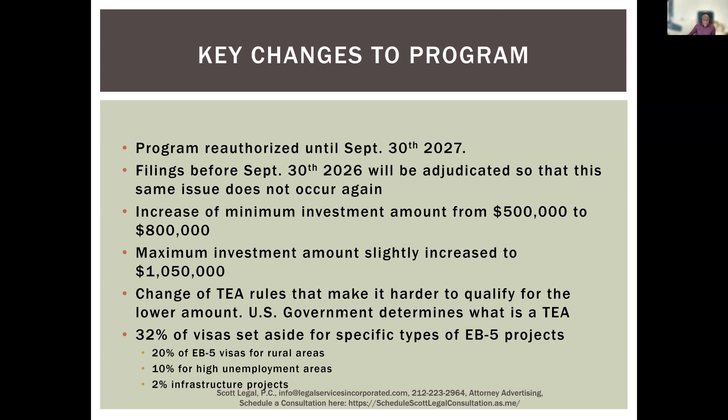There was also a change to the TEA rules to make it harder to qualify for the lower amount, because there was quite a bit of abuse happening. Another big change was the set-aside, a carve-out that reserves 32% of visas for rural areas, high unemployment areas, and infrastructure projects. This was really helpful because it allows individuals who don't have a current category — nationals from China or India — to essentially jump the line and get the green card faster. As a result, almost all regional center projects are now in rural areas or high unemployment areas.